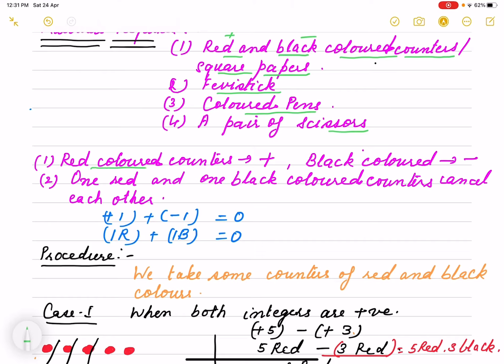Now red color counters represent plus color, plus, and black color counter will represent negative. And one black, one red and one black will cancel each other. That means it is plus 1 minus 1 will cancel each other.